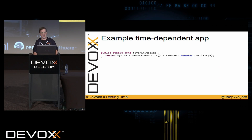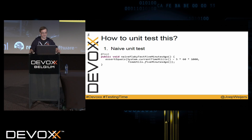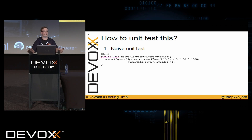How are we going to unit test this method? Well, we can write a naive test: just take the current time, subtract five minutes, and call our method — that should be the same, right? I have two problems with this test. One is that it's not a unit test; it's depending on the underlying system because it calls System.currentTimeMillis, so by definition it's not a unit test.